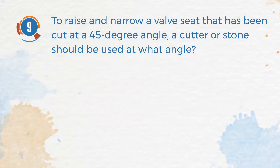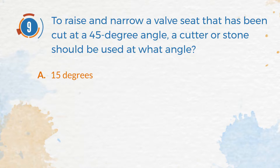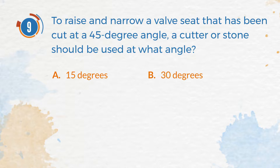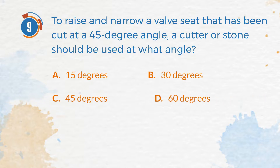Number 9. To raise and narrow a valve seat that has been cut at a 45-degree angle, a cutter or stone should be used at what angle? A. 15 degrees. B. 30 degrees. C. 45 degrees. D. 60 degrees.